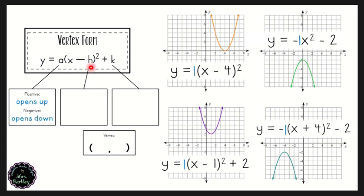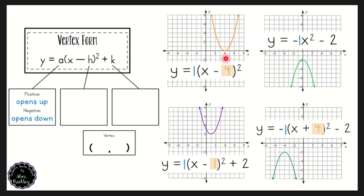Looking at the h value, highlighted in these equations: we have an h value of four, an h value of one, and an h value of four. We'll address the positive and negative difference between equations in a moment. In one equation there are no parentheses, so there's no h value highlighted. Looking at the graphs, the four corresponds to the x value of the vertex, the one is where that vertex is located on the x axis, and here negative four is where the vertex is located.